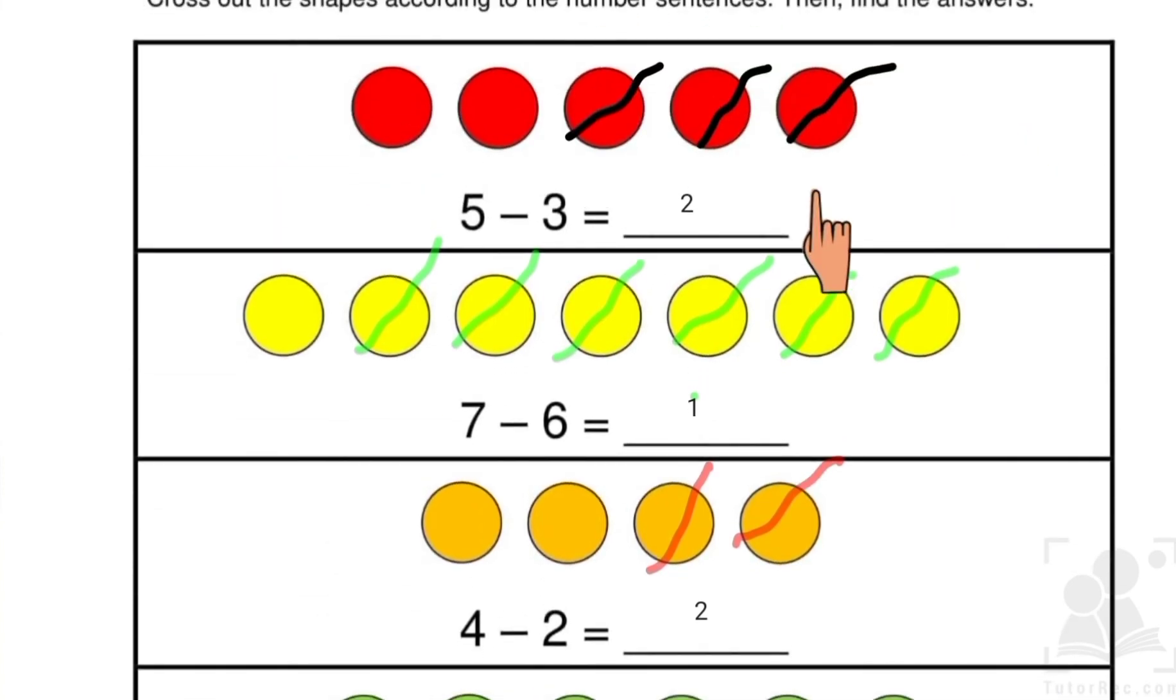So as you can see, we solved a total of three questions. First was five minus three equals two. Second was seven minus six equals one. Third was four minus two equals two.